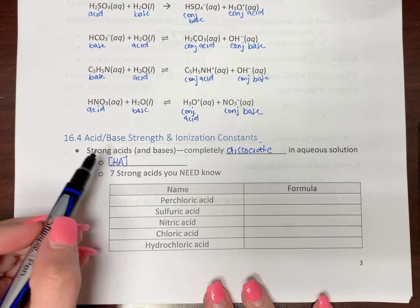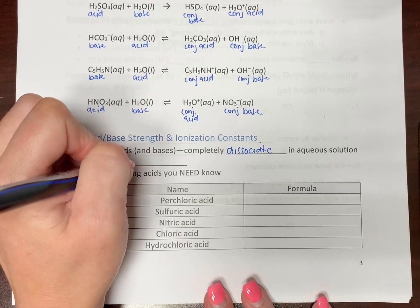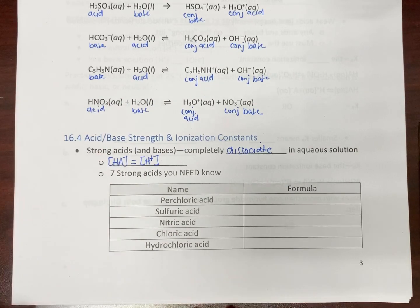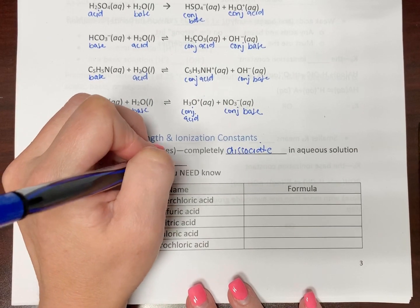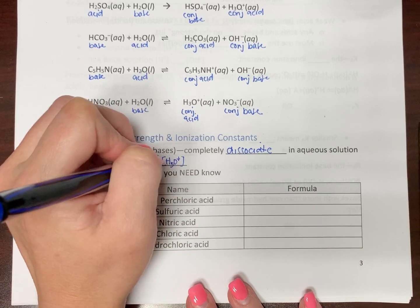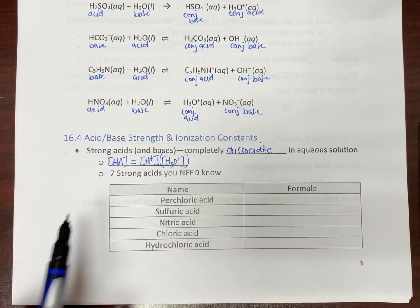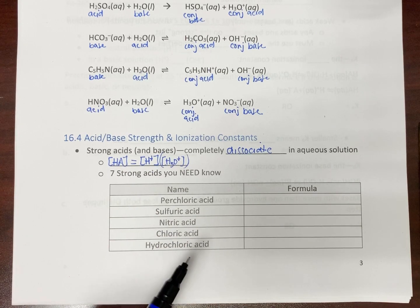So the concentration of your acid is the same as your concentration of hydrogen ion. Or if you want to say H3O+, that works too. I just say H+. So that means the concentration is equivalent. That makes things easy for us later on in the math.